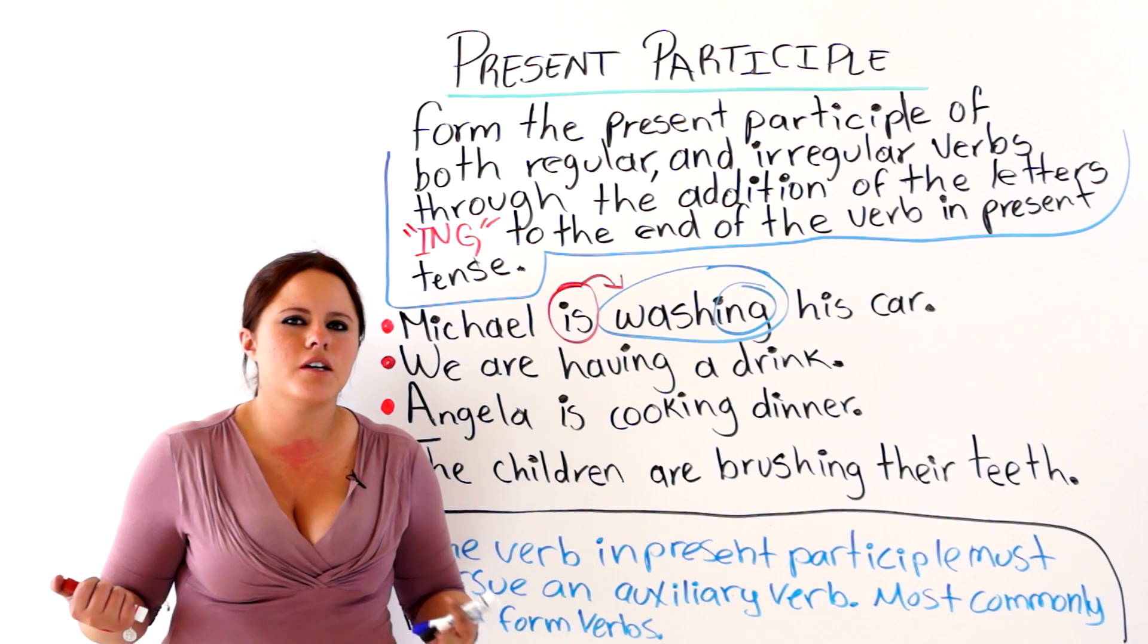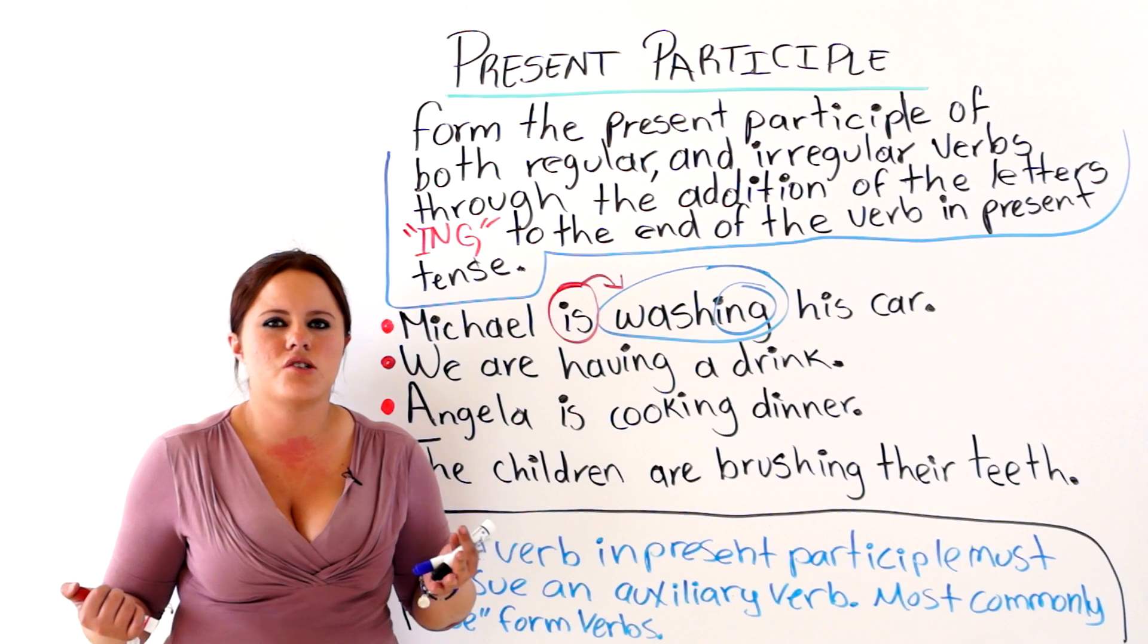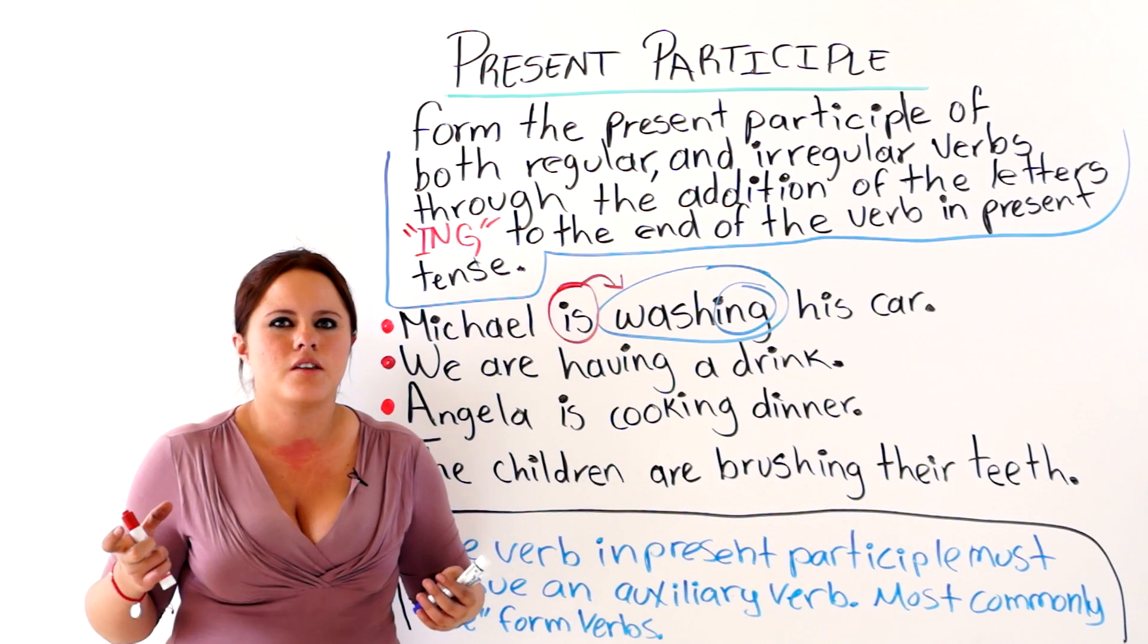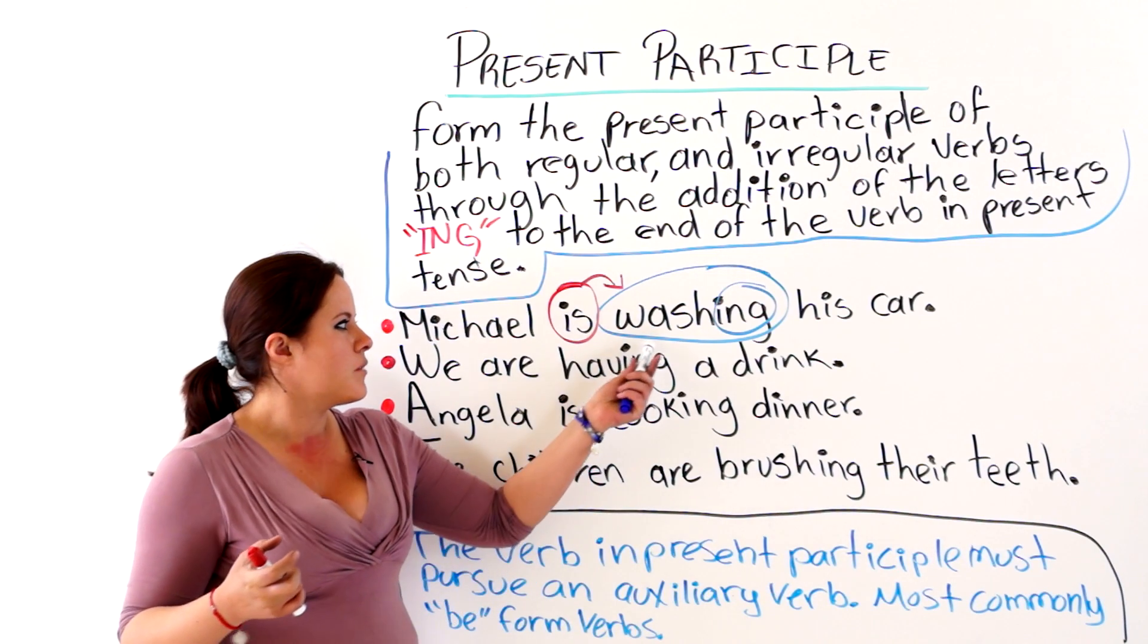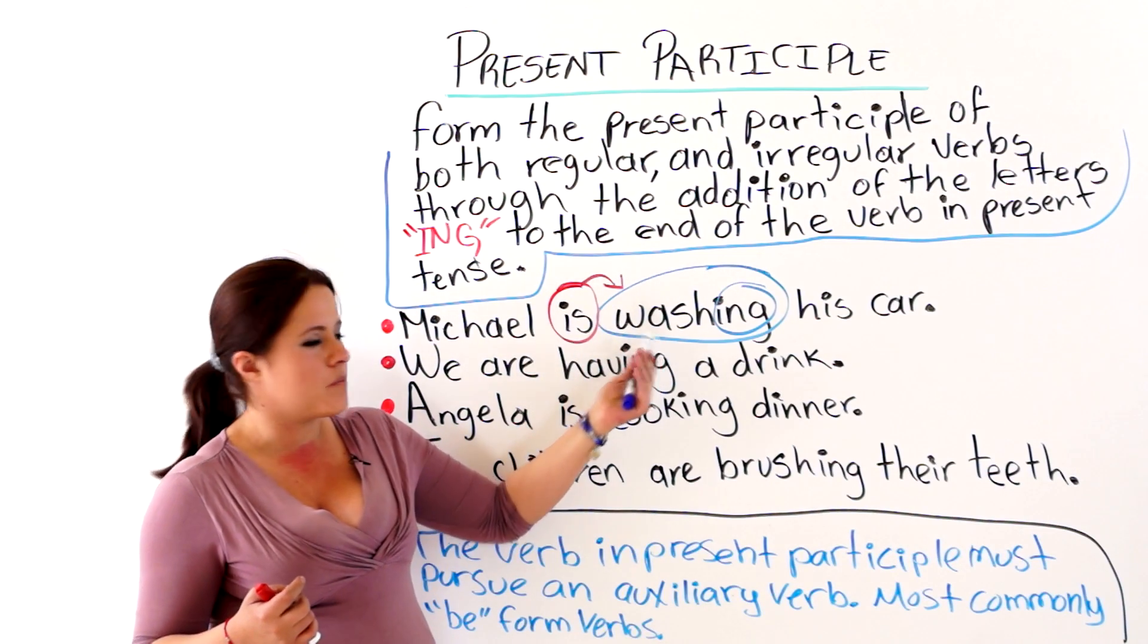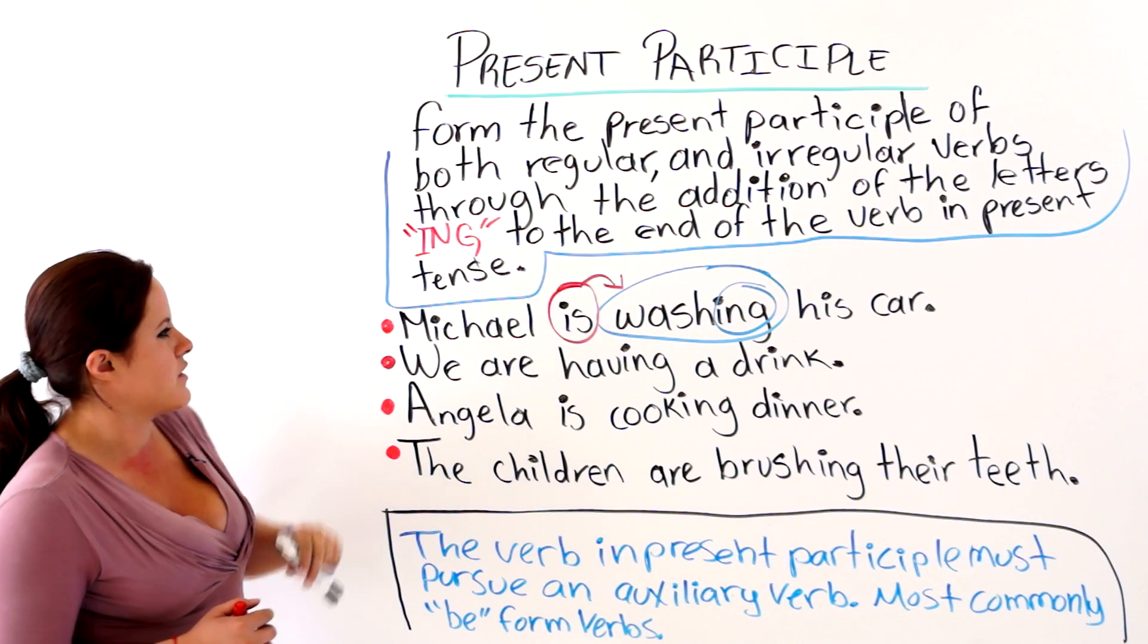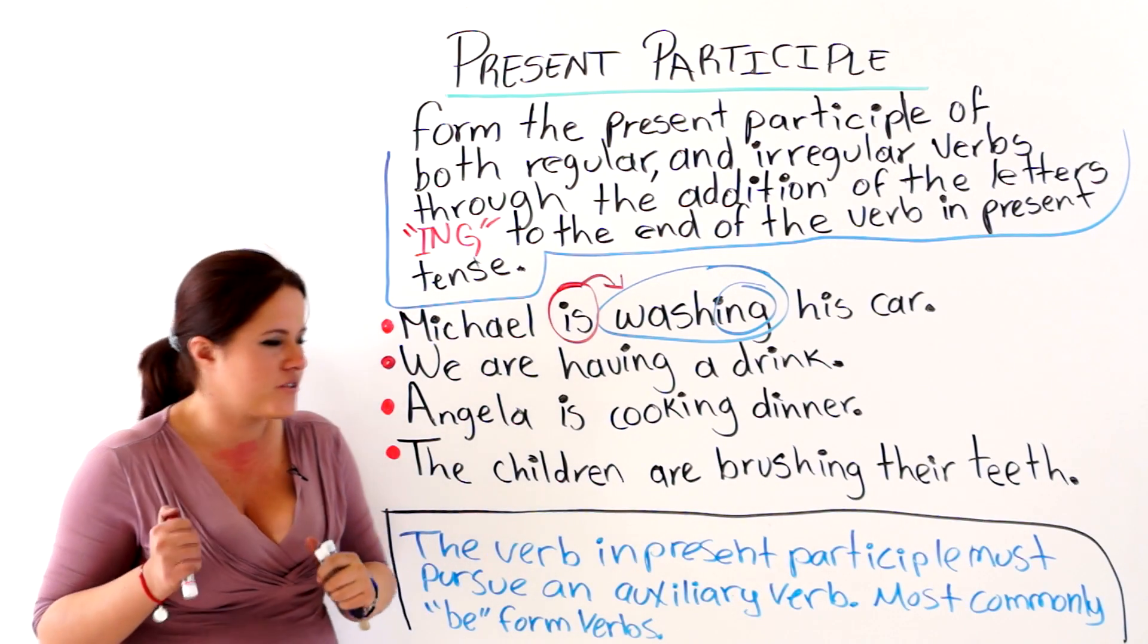For example, marketing. Marketing is an interesting profession. Marketing. Then it would be a gerund. But this is not. This is a present participle verb. And it makes a present progressive sentence, or statement.